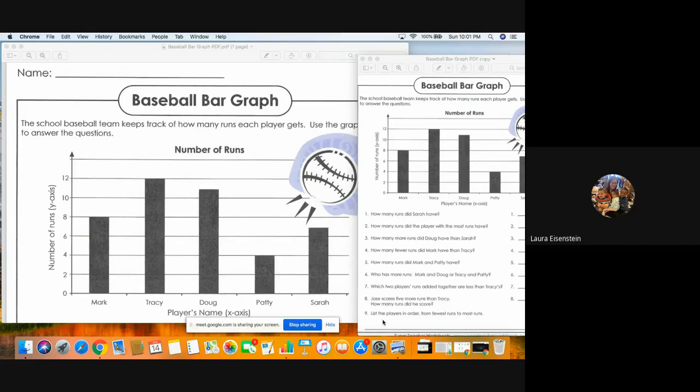Number seven, which two players' runs added together are less than Tracy's? So they want to know which two players added up together would be less than Tracy. So if we look over here, we see that Tracy, she has the most runs. She has 12. So you have to figure out which two added up together would be less than Tracy.